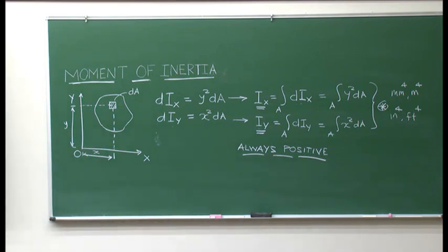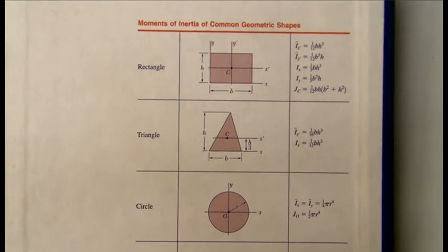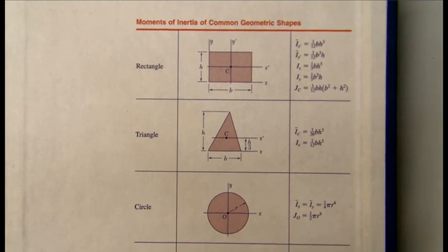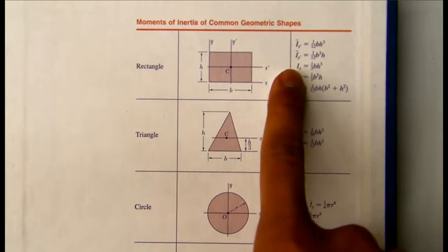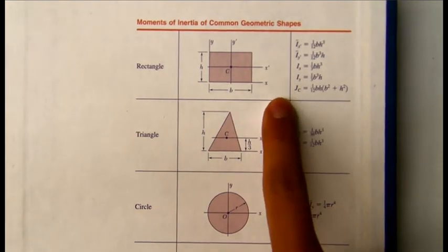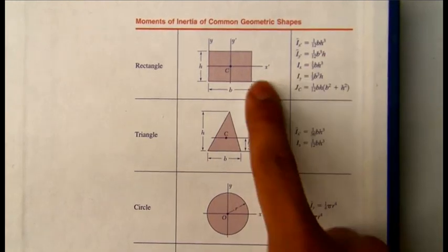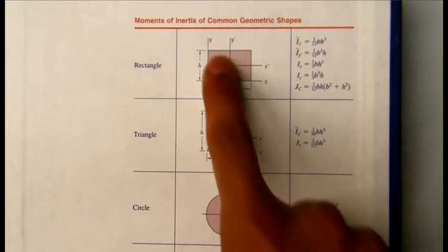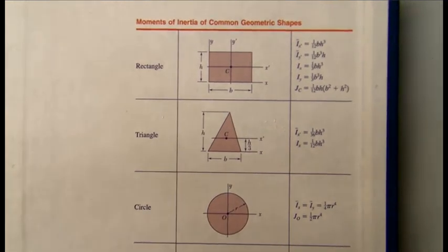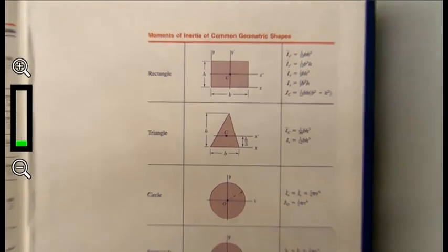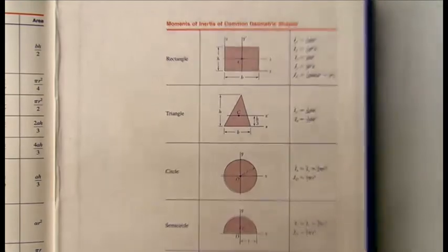Let's go to the document camera to look at moments of inertia for some standard shapes. Here you can see the moment of inertia of a rectangle about the x-prime centroidal axis and the x-axis passing through the base. Moments of inertia about the y-prime and y-axes are also shown. For most standard shapes — rectangle, triangle, circle, semicircle, and quarter circle — these moments of inertia are readily available in tables.